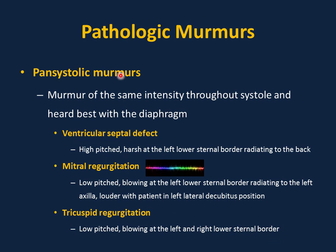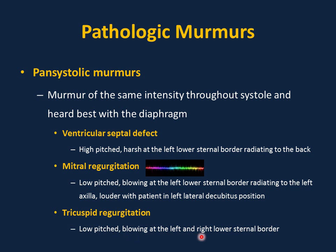The pansystolic murmur is of the same intensity throughout systole and best heard with the diaphragm. Ventricular septal defect produces a high-pitched, harsh murmur at the left lower sternal border radiating to the back. Mitral valve regurgitation produces a low-pitched, blowing murmur at the left lower sternal border radiating to the left axilla, louder with the patient in the left lateral decubitus position. Tricuspid regurgitation produces a low-pitched, blowing murmur at the left and right lower sternal border.